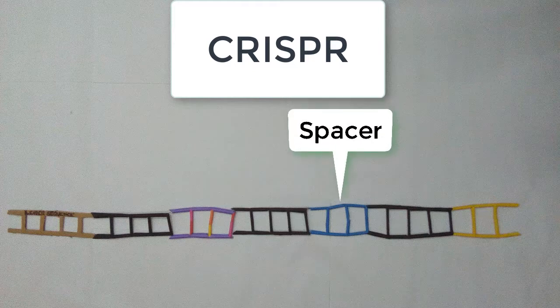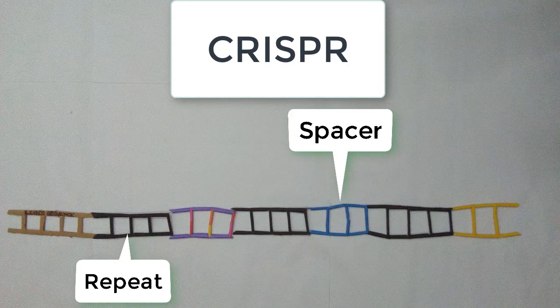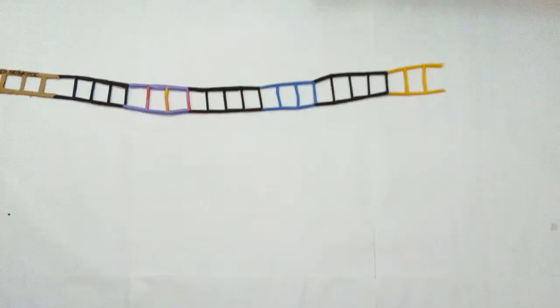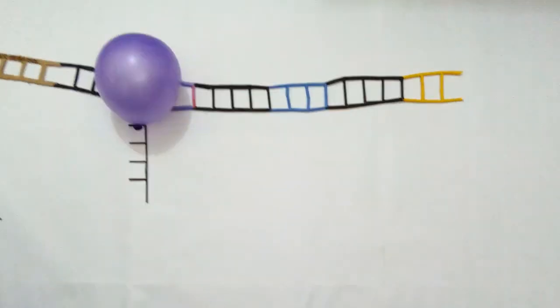The colorful ones belong to different types of phages and the black is from the CRISPR system. When phages attack again, the RNA polymerase quickly makes an RNA copy of the DNA.